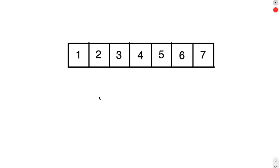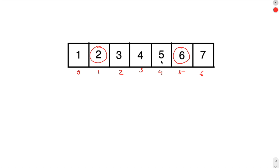Let's have a look at this array. Let's say we want to swap the array elements at index 1 and index 5. Let's mark the indexes of this array: 0, 1, 2, 3, 4, 5, and 6. The values at the elements do not matter, so they can be anything.